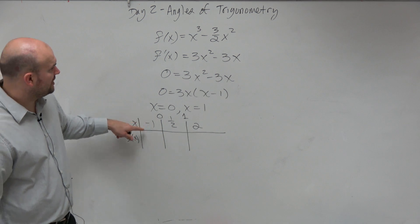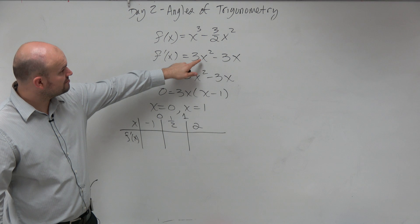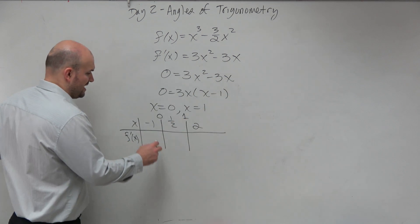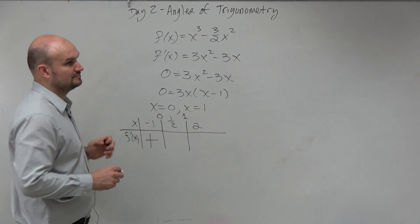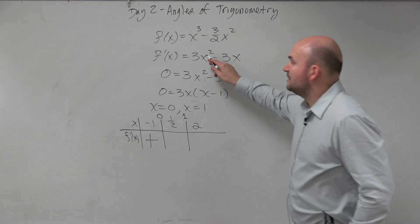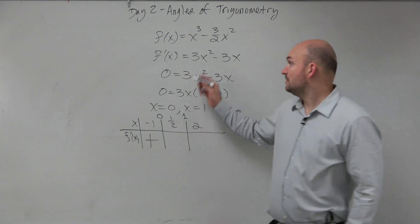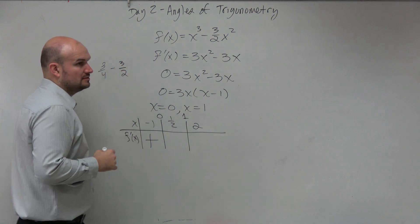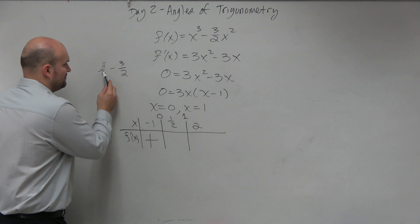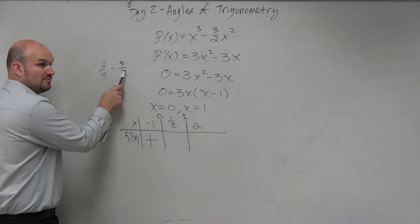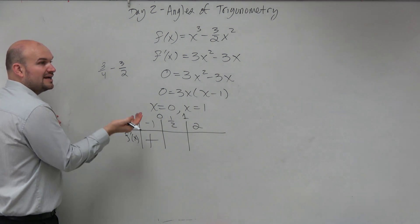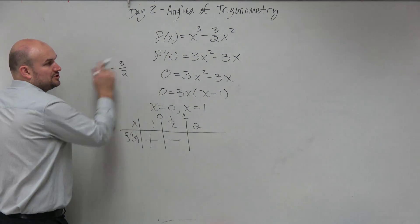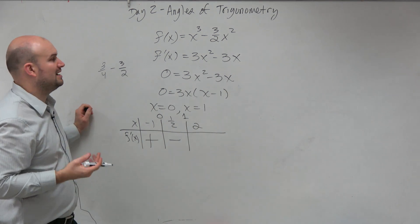Plugging negative 1 into the derivative: negative 1 squared is 1, times 3 is 3, and negative times negative is positive, so positive plus positive gives a positive. For one half: one half squared is one fourth, giving 3 fourths minus 3 halves. Since 3 halves is larger, we're subtracting a larger number from a smaller one, so the result is negative. Plugging in 2: 2 squared is 4, times 3 is 12, minus 6, so that's positive.